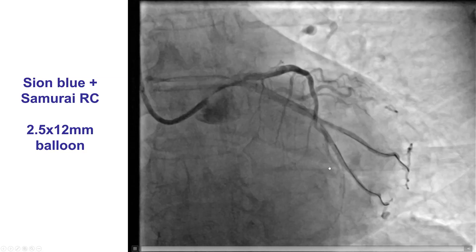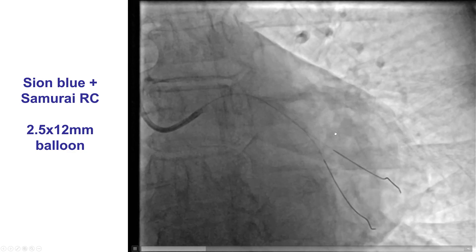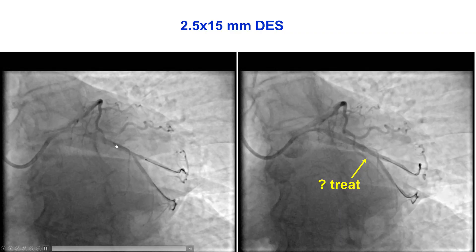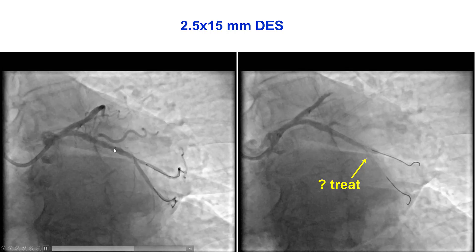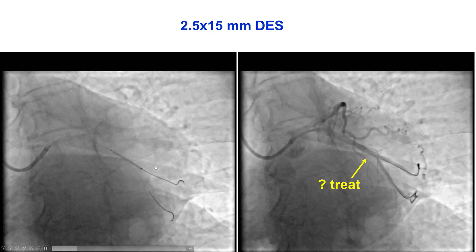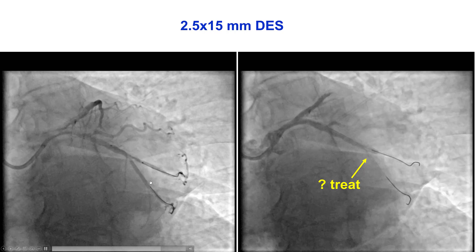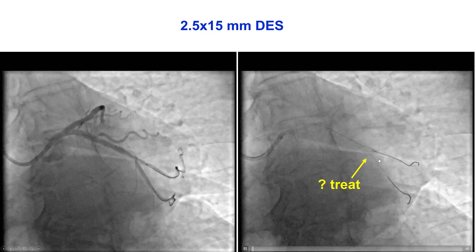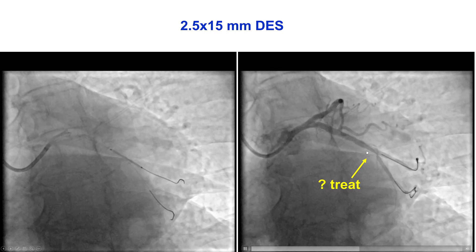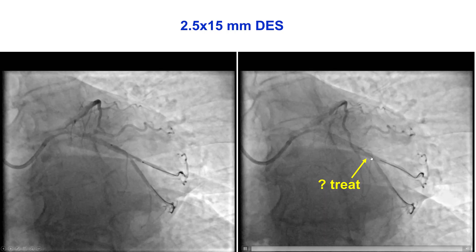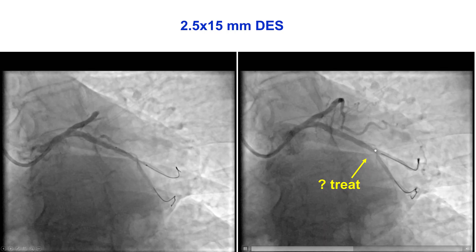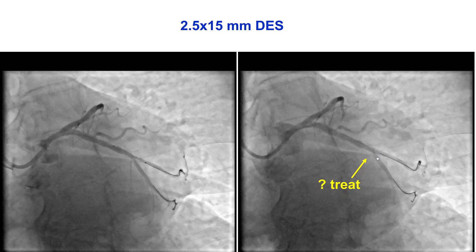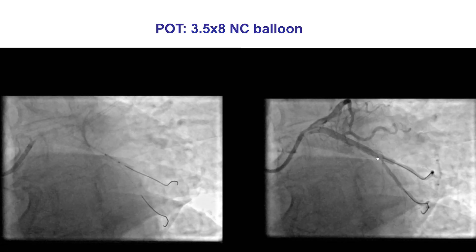We wired both branches with workhorse guide wires, pre-dilated the lesion, and then did provisional stenting — stenting from the proximal portion of the main vessel to the superior branch, jailing the inferior branch. After the stent is deployed, there is a little pinching of the inferior branch origin, and the question is whether this is significant. If it is, something more may need to be done; if not, it may be close to being done.